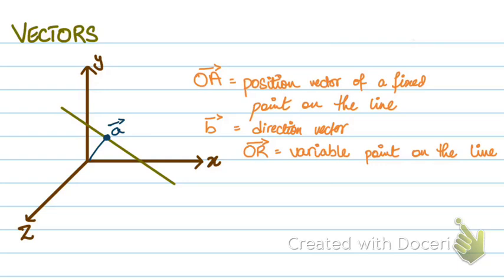The second thing that we need is the direction vector. A direction vector basically shows the direction of the line — where the line is headed or moving towards. It's basically a vector parallel to the line. Any multiple of the direction vector added to my fixed point will give me any random point on the line — that's OR. So my equation is R equals to a fixed point plus lambda B, where lambda is my multiple multiplied by the direction vector.